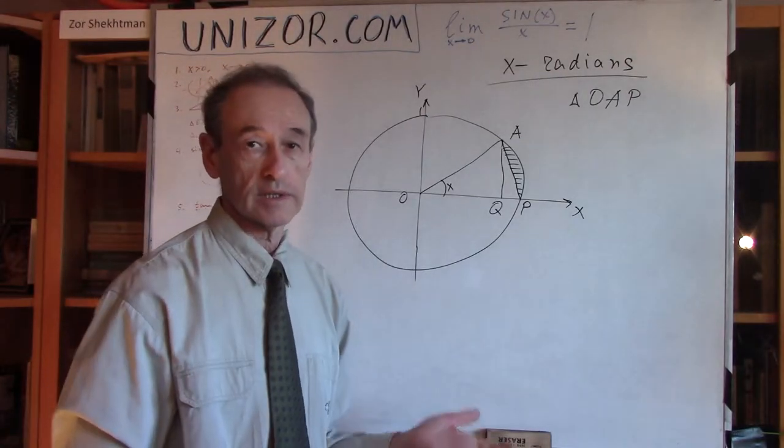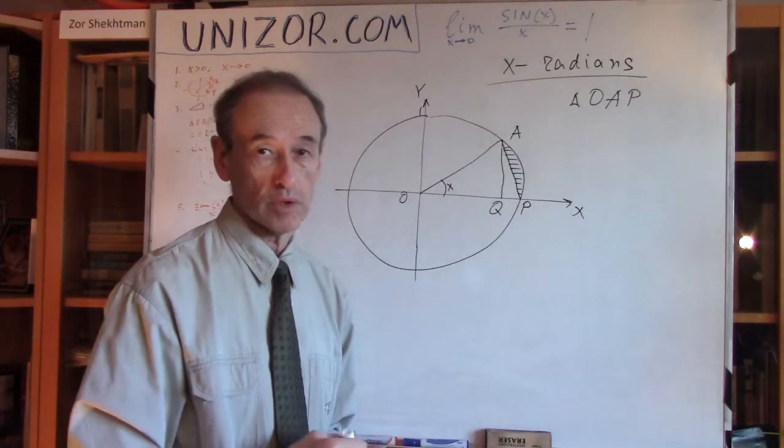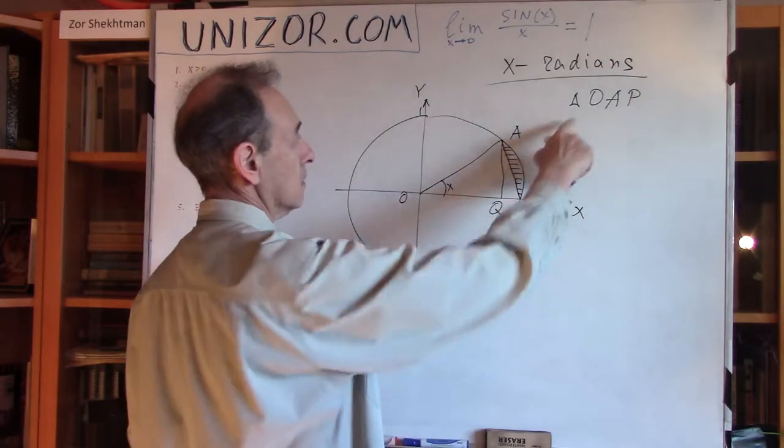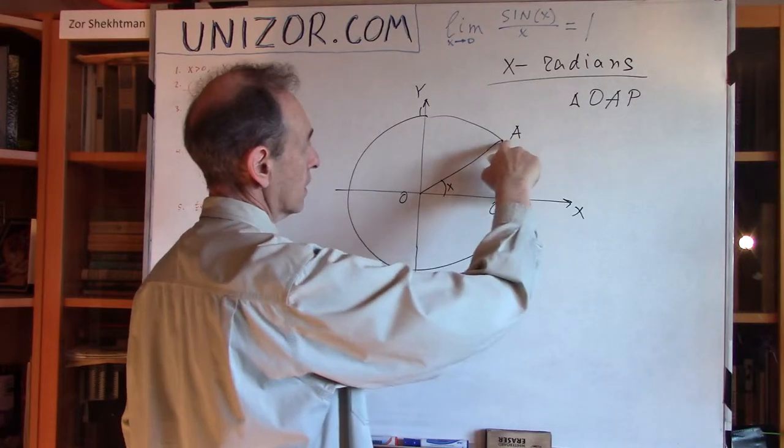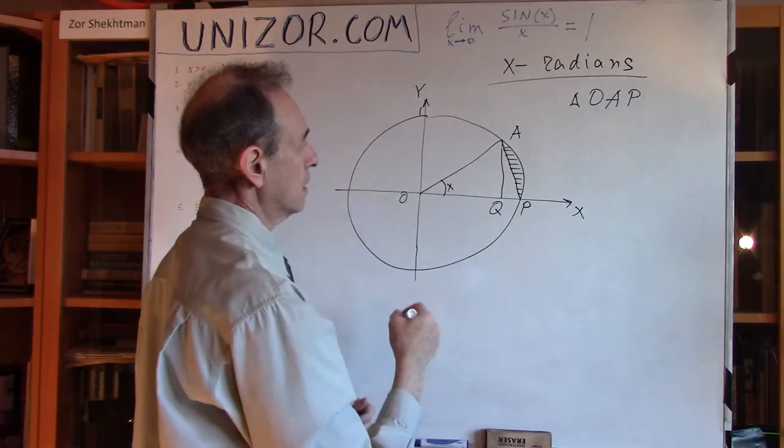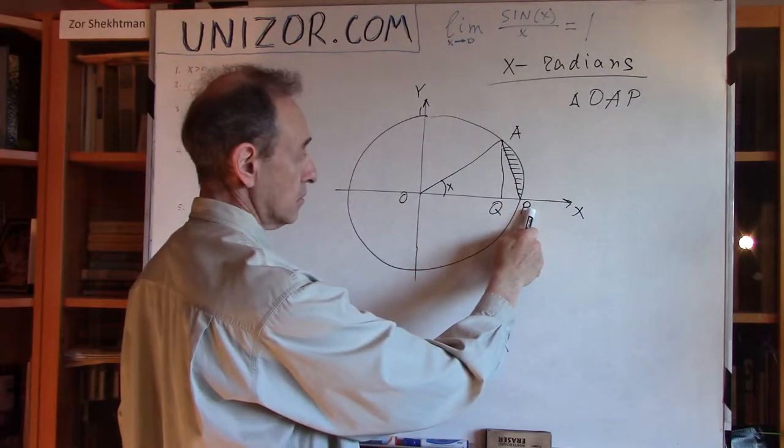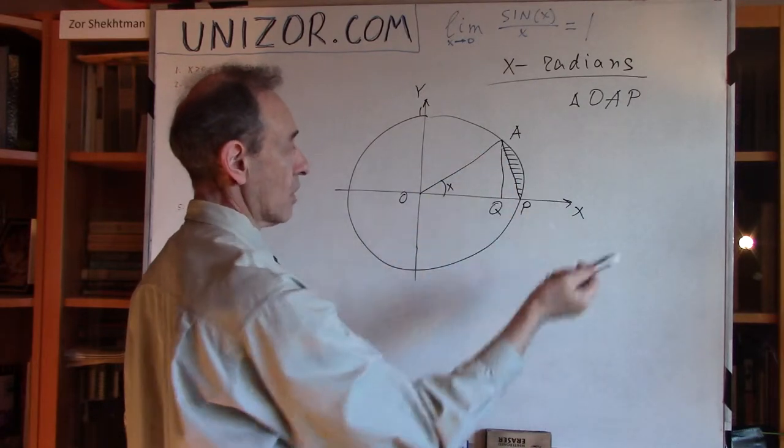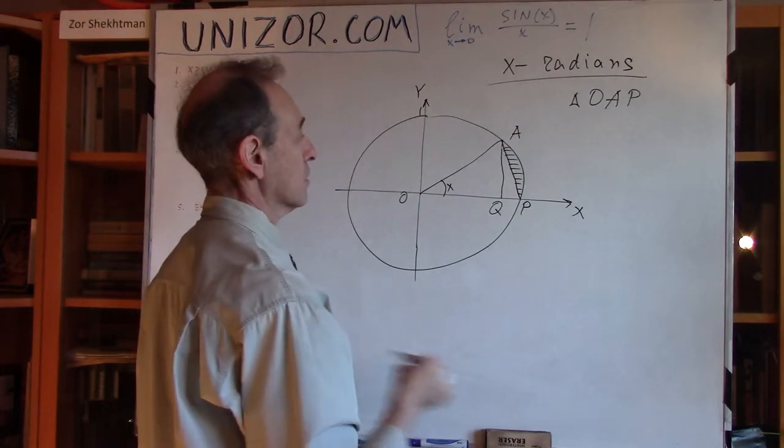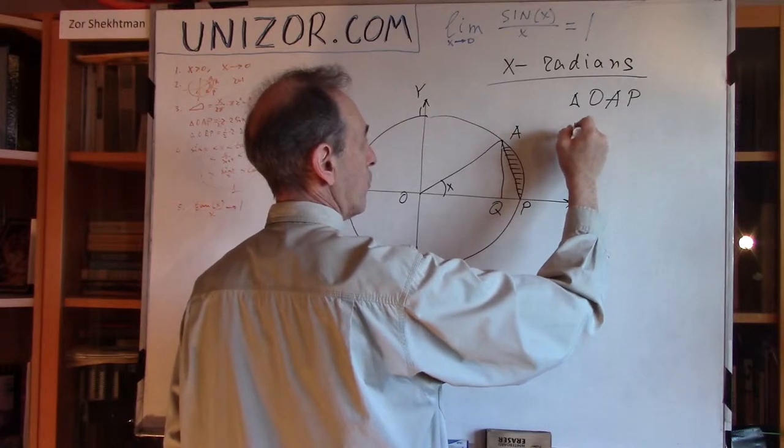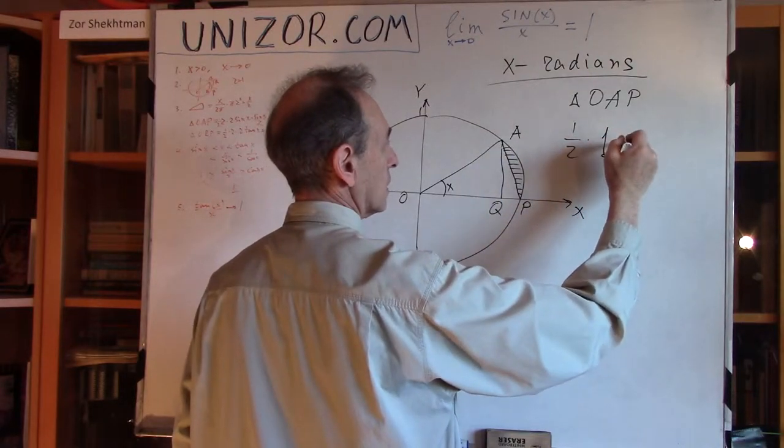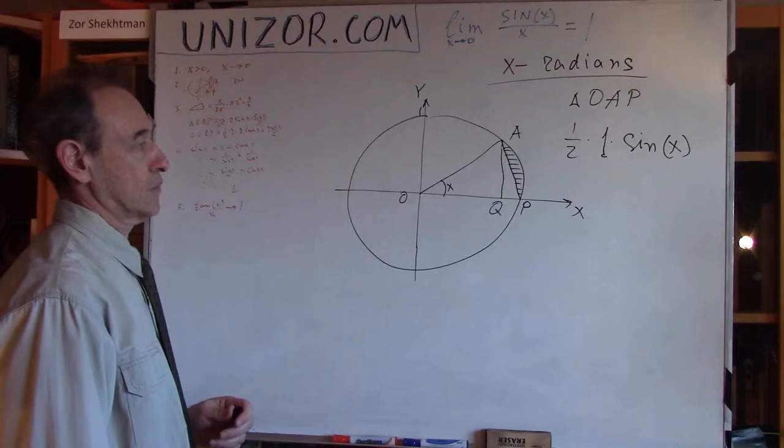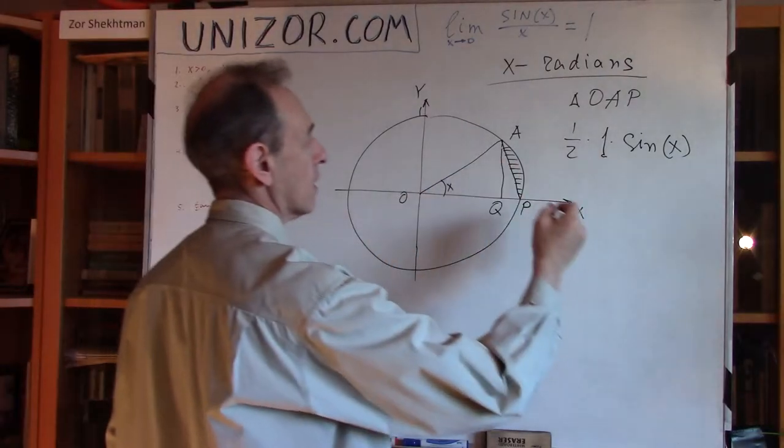I would like to compare the area of this triangle and the area of a sector P, O, A, which includes this little piece between the chord A, P, and the arc of a unit circle. Obviously, the area of a sector is greater than the area of the triangle, because of this little piece. So, let's just calculate exactly what's one and what's another, and we will get an inequality between these two areas.